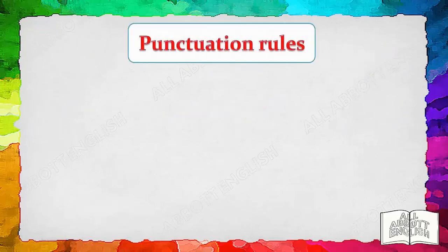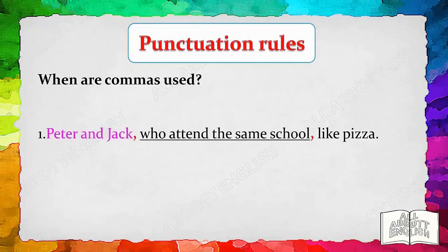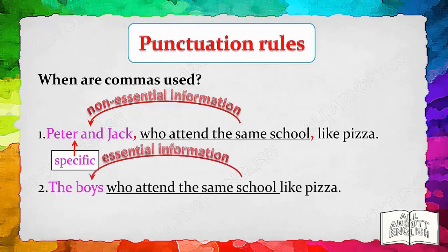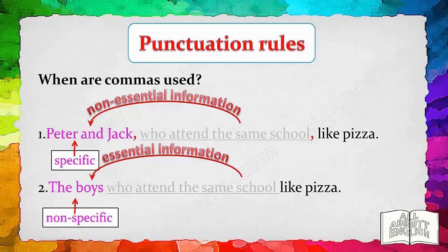Before we look at some specific clauses, let's find out why some groups of words are separated by commas and others are not. When a group of words has commas to separate it from the rest of the sentence, it is very likely to be additional information. For example, 'Peter and Jack, who attend the same school, like pizza.' The additional information 'who attend the same school' is about Peter and Jack; however, it is non-essential because we know exactly which boys like pizza. Once we have identified the extra group of words, we can mentally remove it: 'Peter and Jack like pizza.' 'The boys like pizza.'